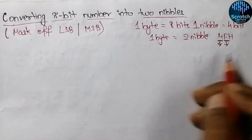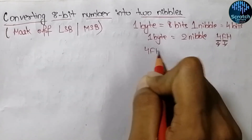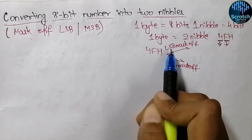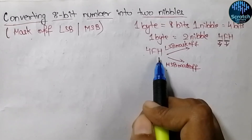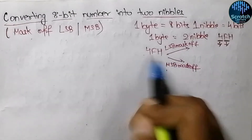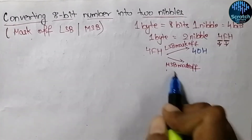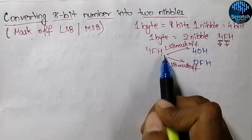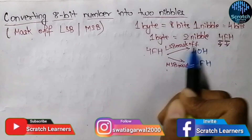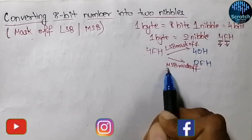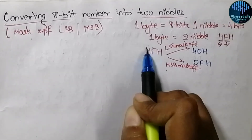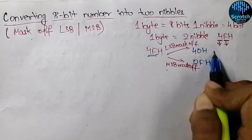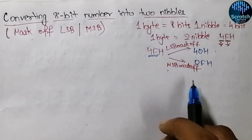So what does masking mean? Let's consider the example 4F hex. If we perform the least significant bit mask off, it means the least significant nibble will be converted into 0, so LSB mask off will result in 40 hex. And if we perform masking off on the most significant bit, the result will be 0F hex. So LSB masking converts the least significant nibble to 0 and MSB masking converts the most significant nibble to 0, converting the 8-bit number into 2 nibbles.